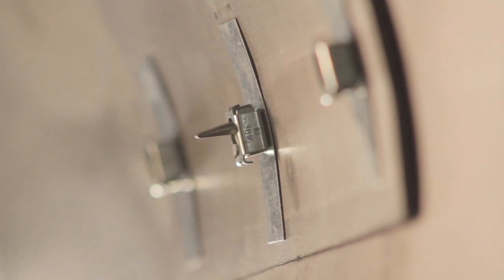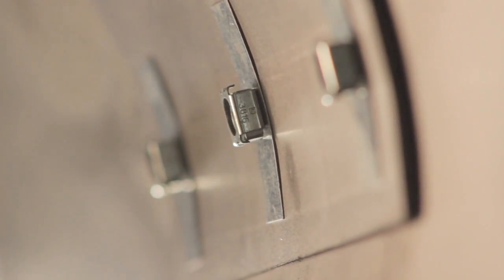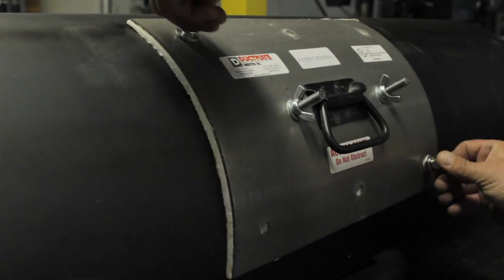Tighten center wing nuts. Then use a screwdriver to center the patent pending fastening system. Then proceed to tightening the bolts and washers.